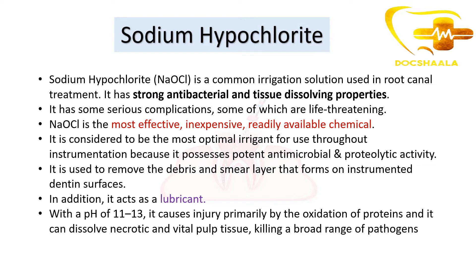Sodium hypochlorite, as you know, it is NaOCl. It is a common irrigation solution which is used in root canal treatment. It has strong antibacterial and tissue dissolving properties. Because of these properties, it is used as an irrigation solution in RCT. It is the most effective, inexpensive and readily available chemical. It is considered to be the optimal irrigation for use throughout instrumentation because it processes potent antimicrobial and proteolytic activity. So it is used to remove the debris and smear layer that forms on instrumented dentin surfaces.